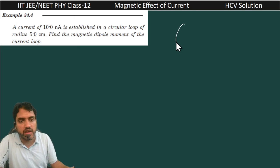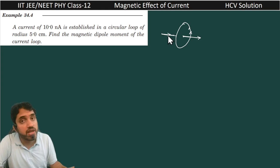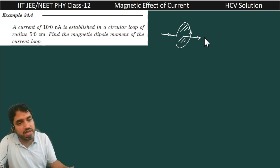So here if this i current is flowing in this circular loop, it will behave like a magnetic dipole. It will produce one magnetic field and this is the direction of that magnetic dipole perpendicular to the area vector, perpendicular to this plane of coil along the area vector.